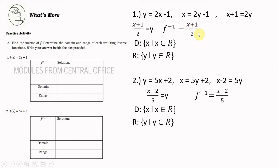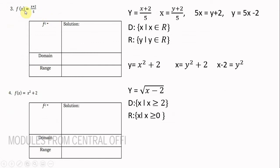Number 2: y = 5x + 2. Interchange x and y: x = 5y + 2. Solve for y: x − 2 = 5y, so y = (x − 2)/5. The inverse of f(x) = 5x + 2 is f⁻¹(x) = (x − 2)/5. The domain and range are both the set of real numbers.